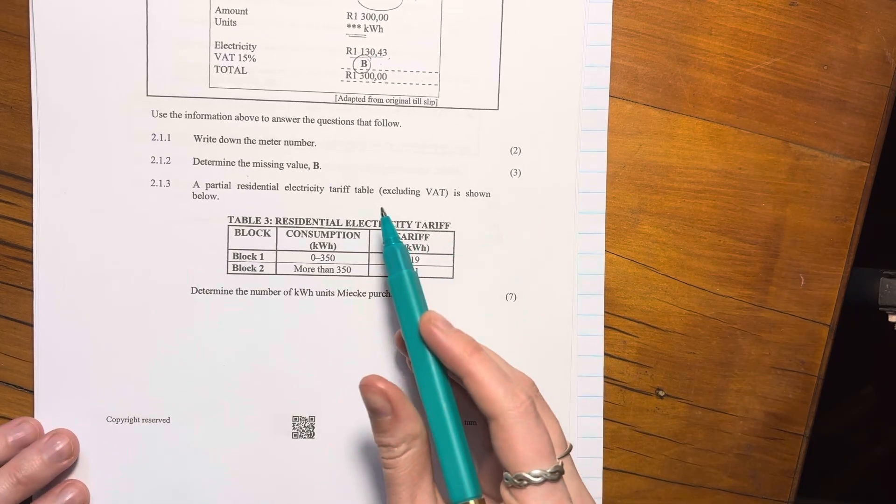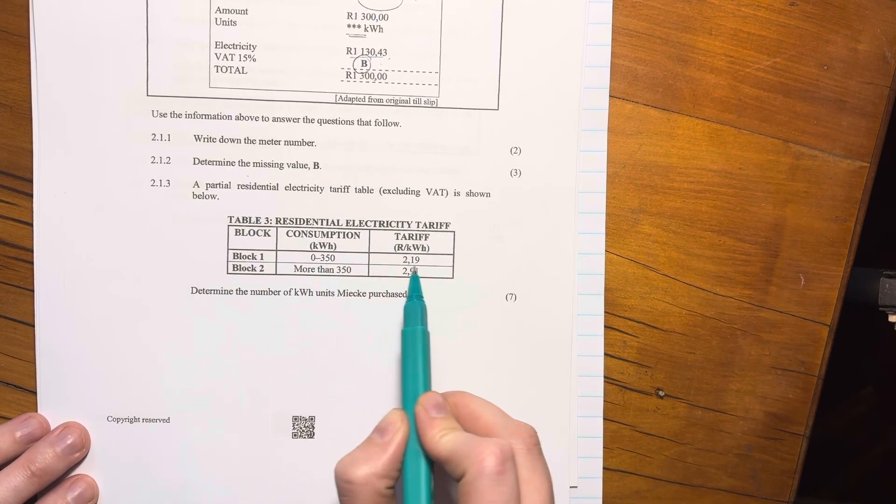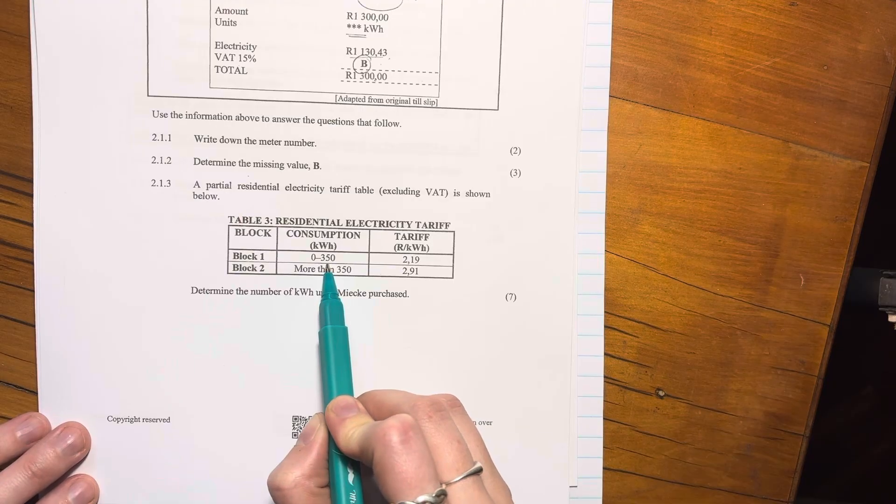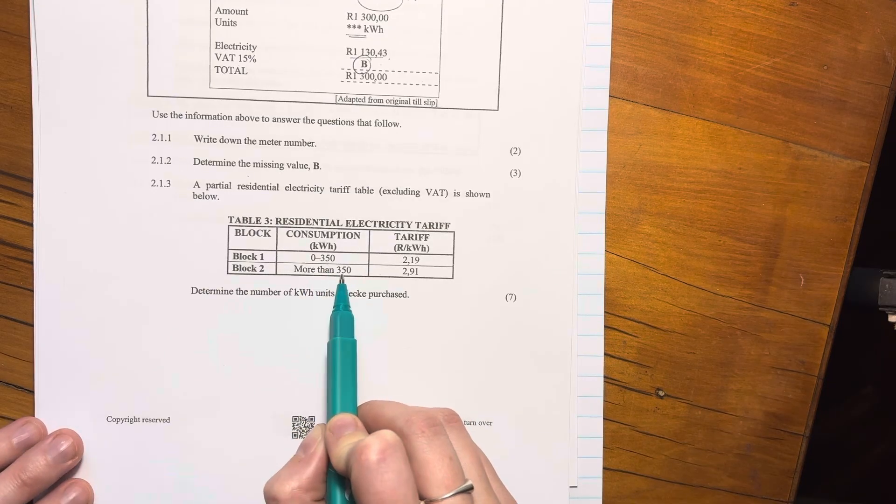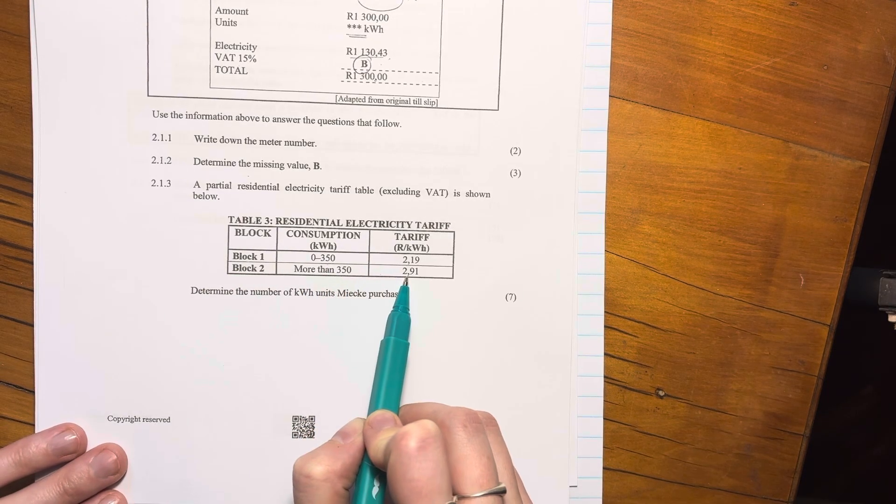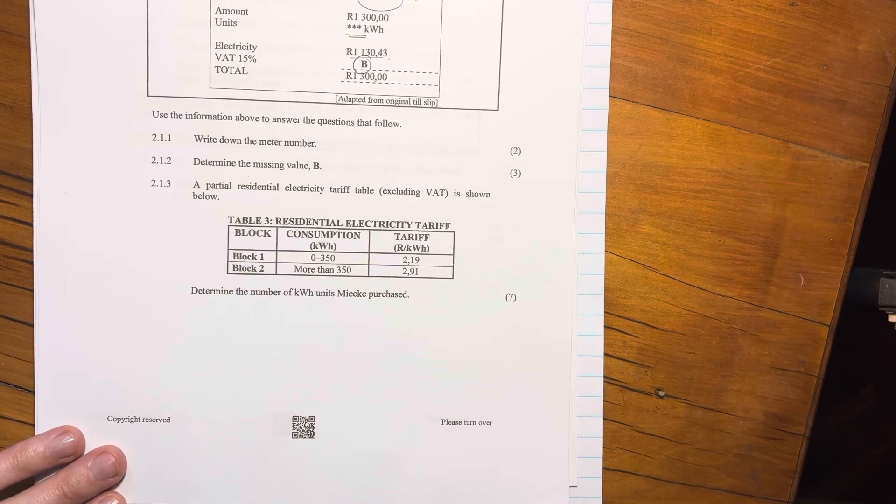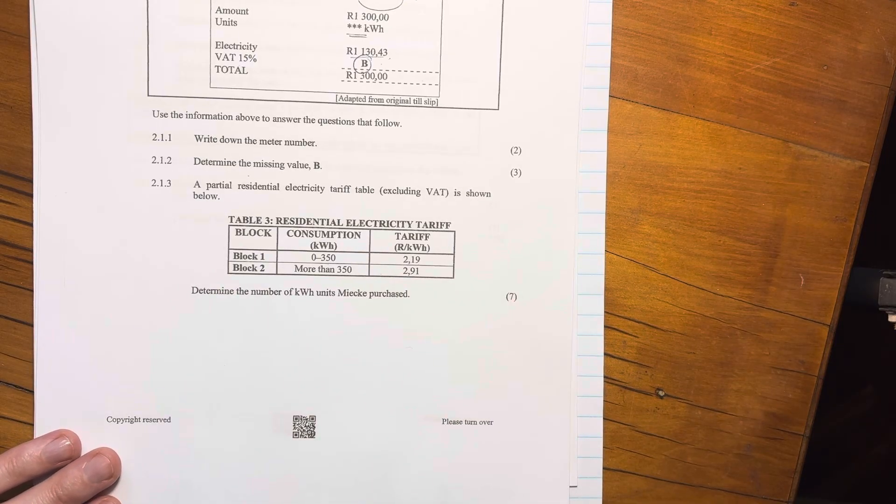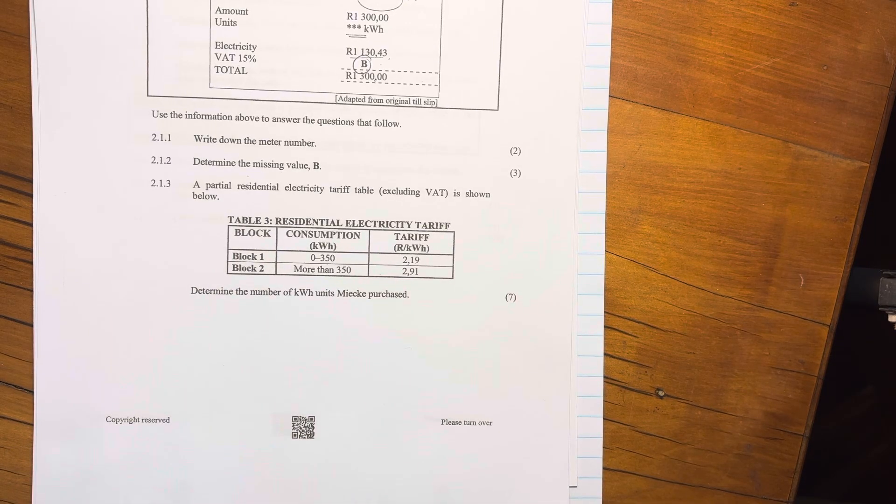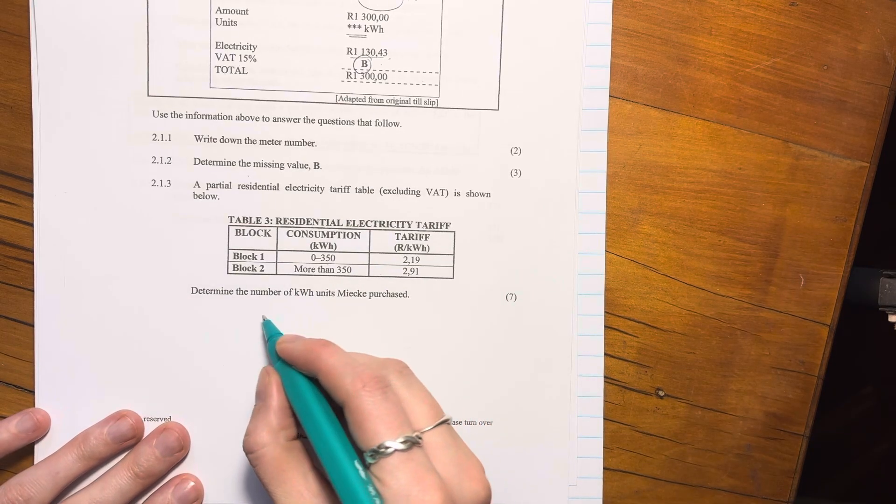Okay, so this is basically the tariff. Remember with electricity, you're charged a certain amount if you use below, in this example, 350. But anything above 350, you get charged more. It's a bit like tax, right? As you use more, you pay more. Same with tax. As you earn more, you pay more tax. Okay. Excuse me. I'm yawning away here.